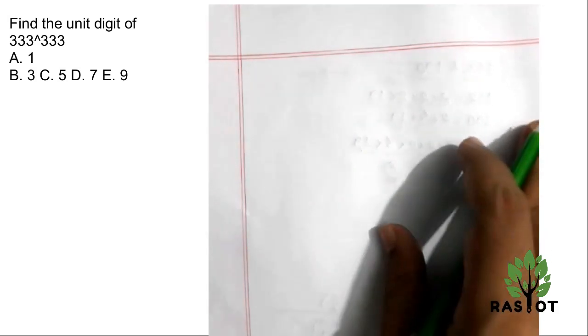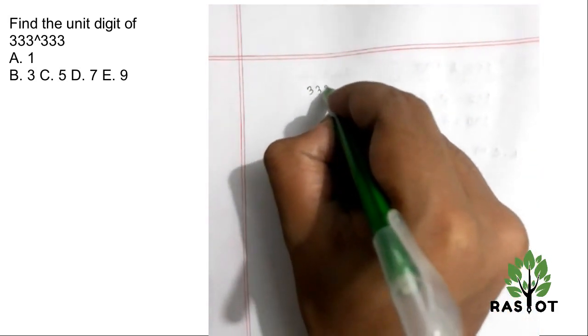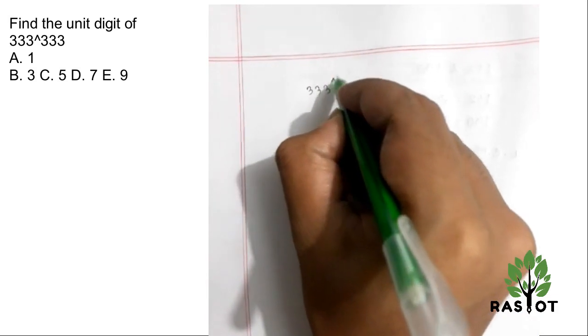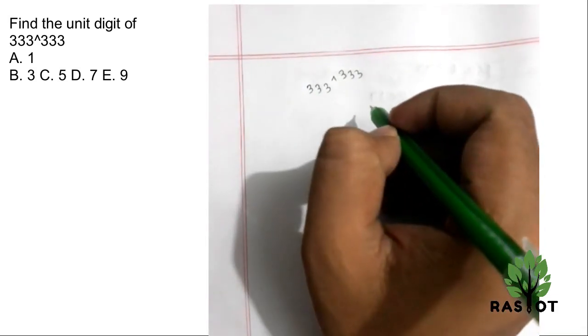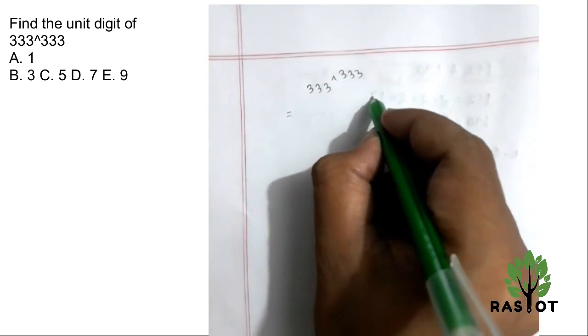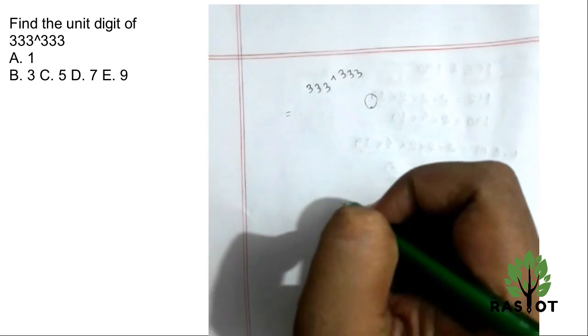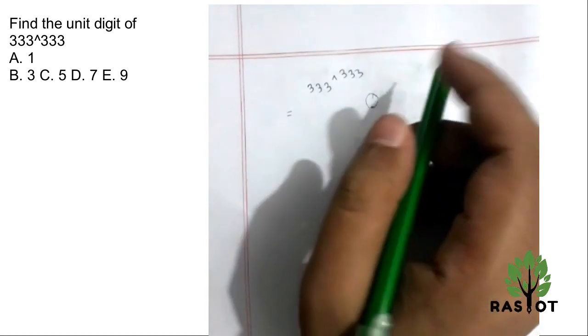Okay, so what's happening in this question? They're saying 333 to the power 333. We need to find the unit digit. Many think about the last unit digit type, but it's not actually that. This is a pattern followed.